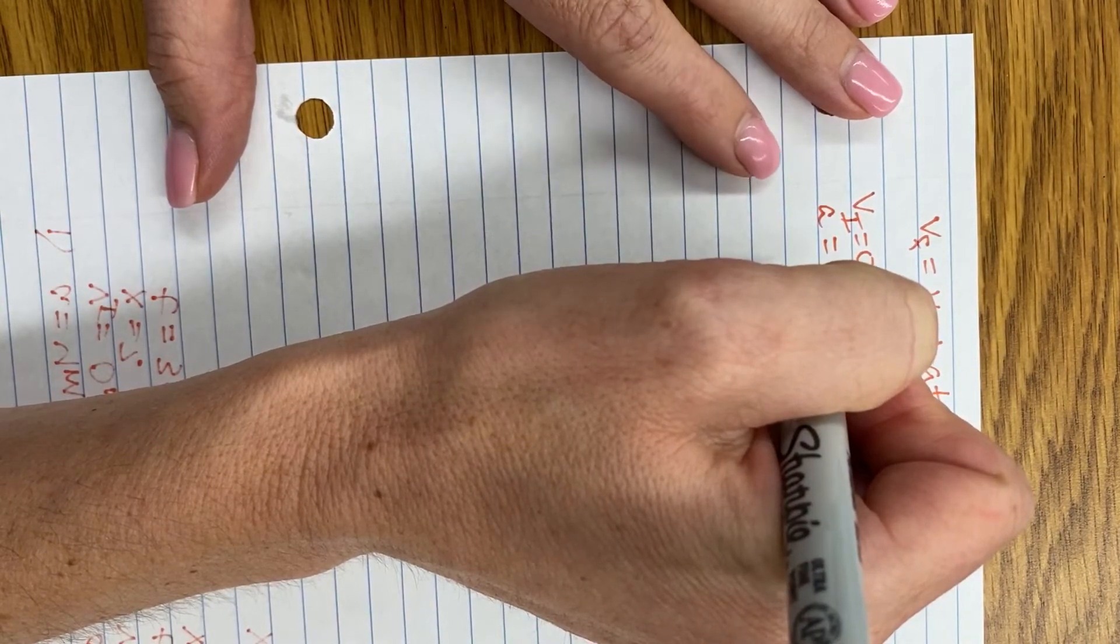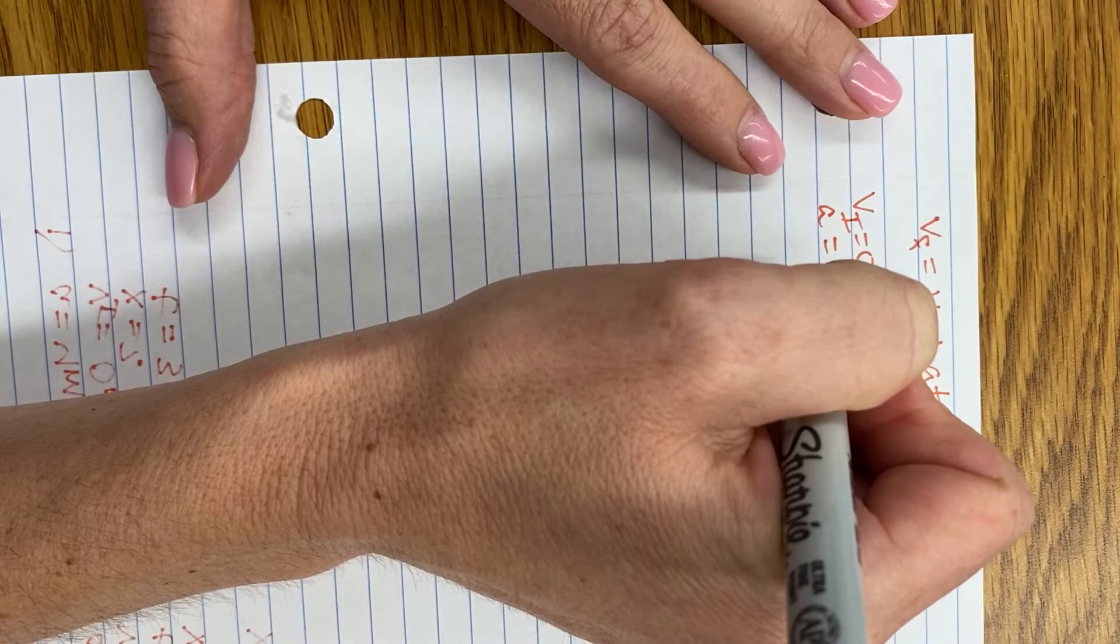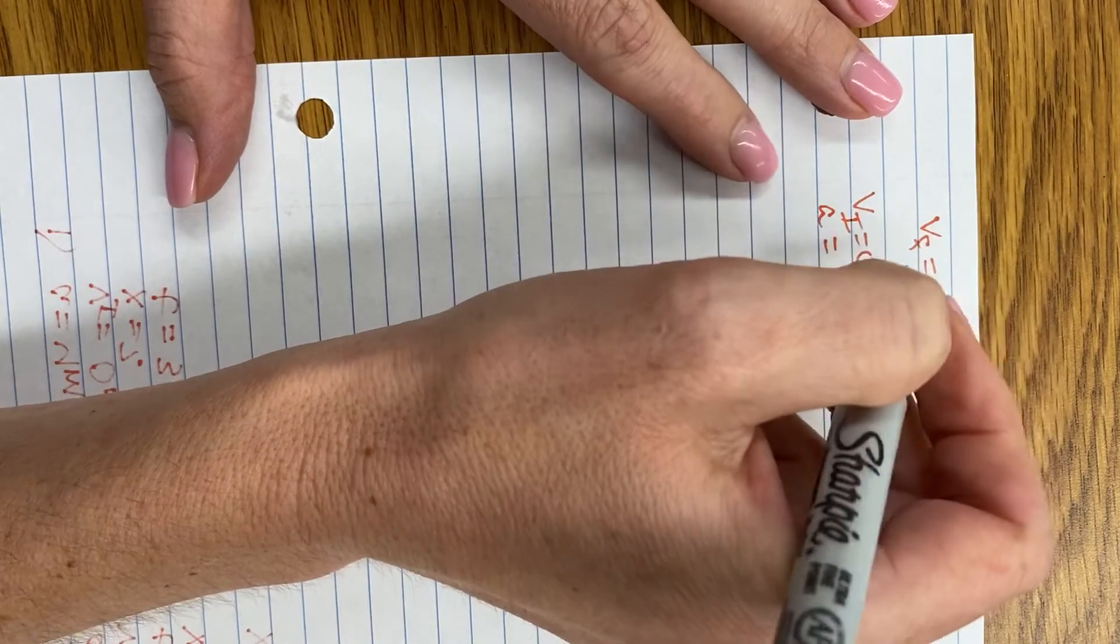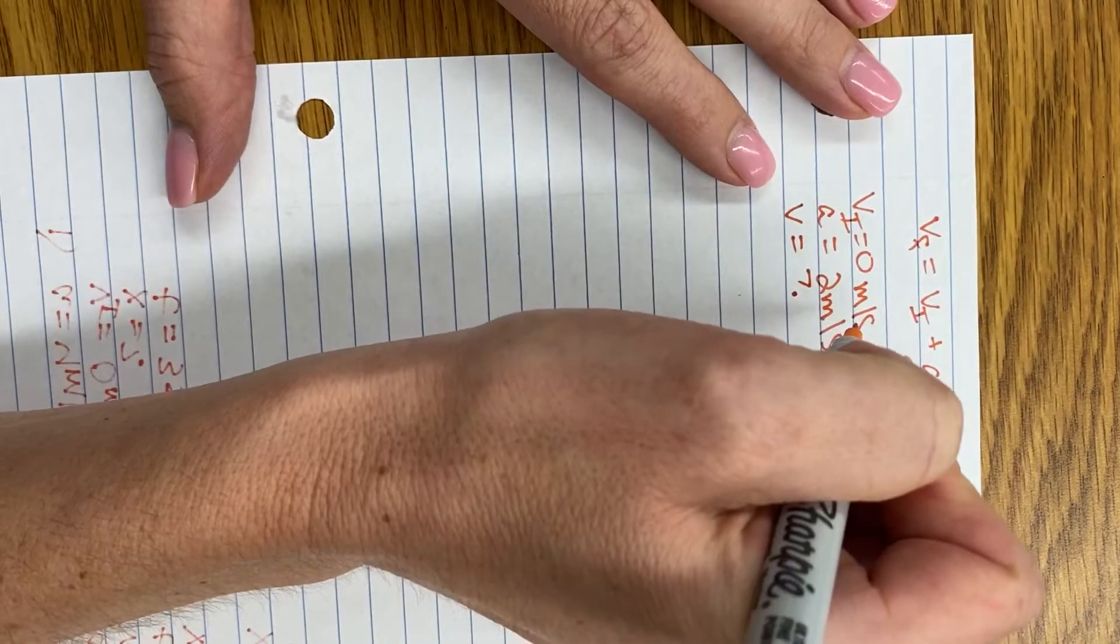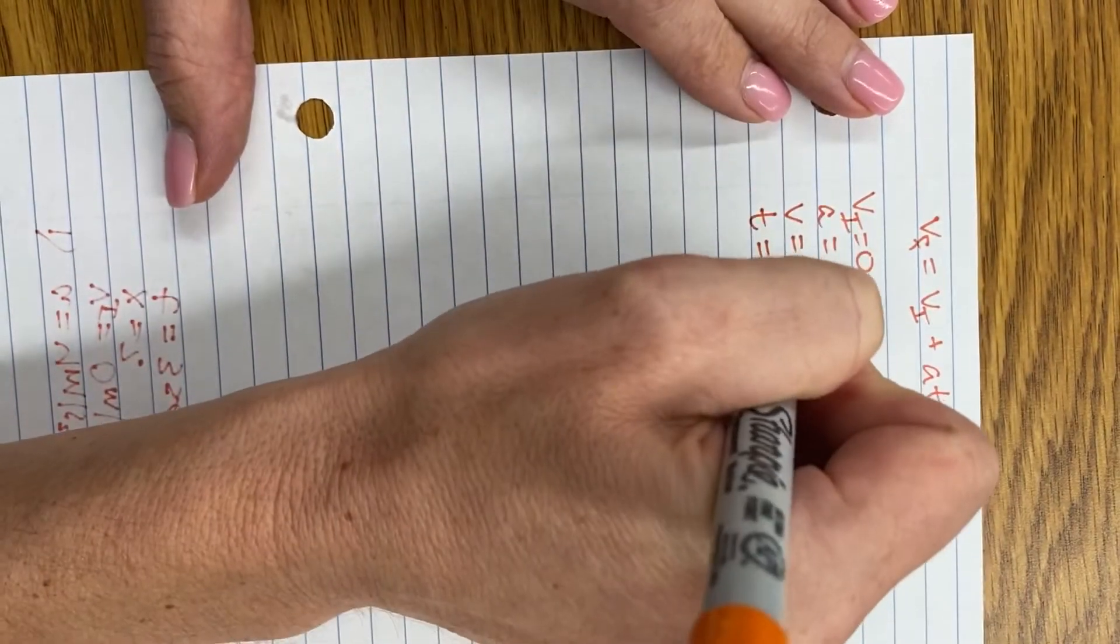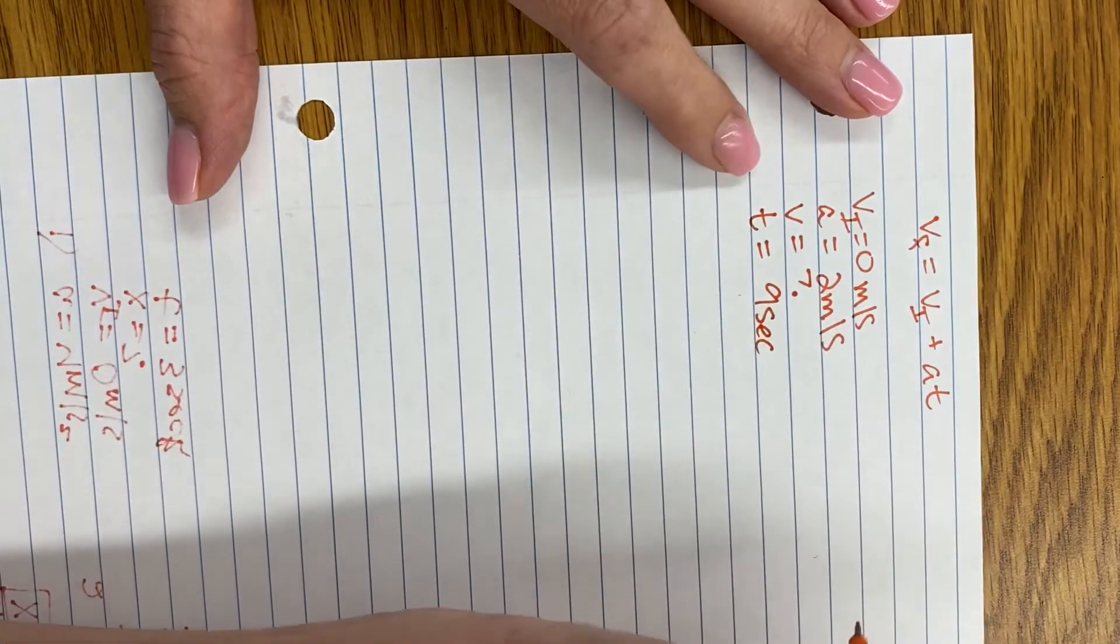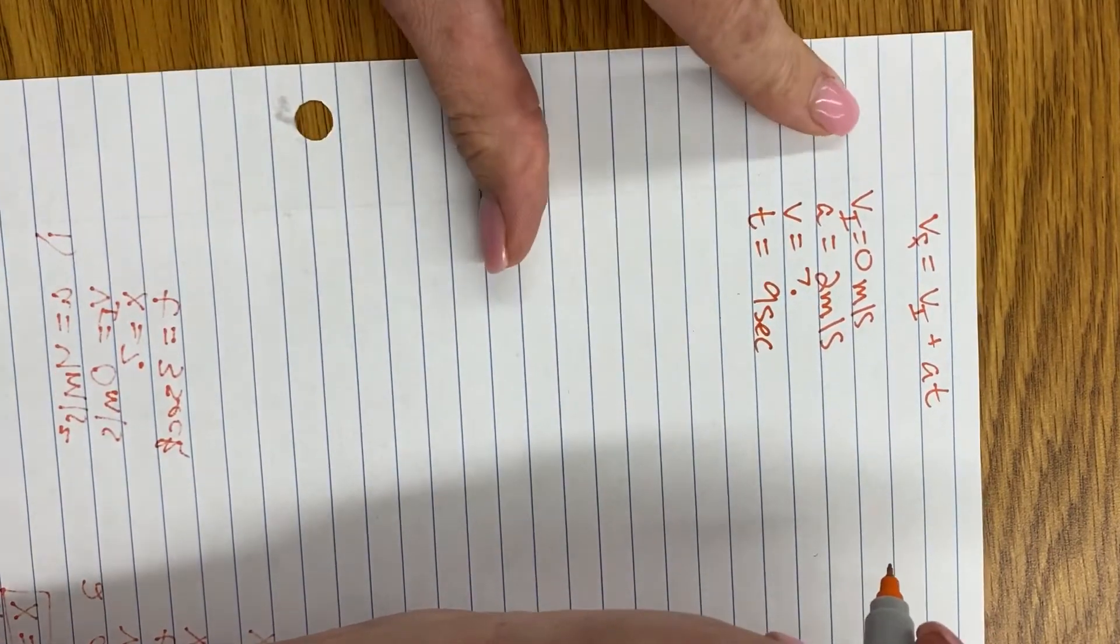Oh, I see what I did. I'm going to change that to say what's the velocity after a time of nine seconds. Okay, I'll update that in the canvas.